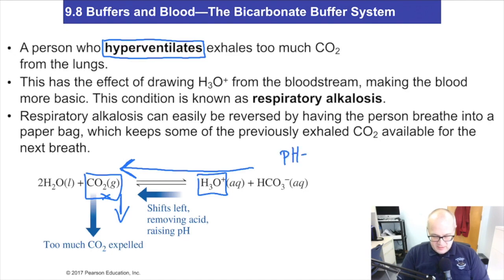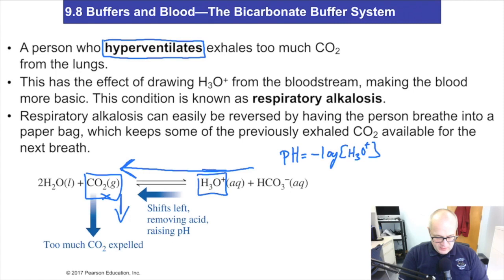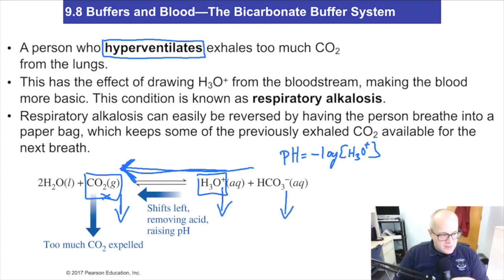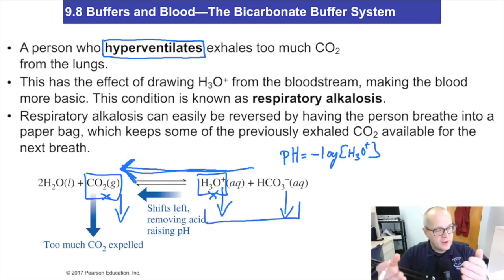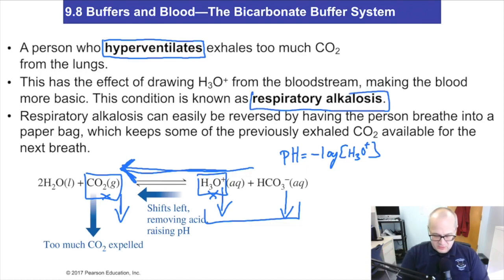Remember, pH is the negative log of the concentration of hydronium. So if the products are reacting to give you starting material, then the concentrations of hydronium and bicarbonate are both going down. That means your pH should go up — as hydronium goes down, pH goes up. And you're becoming more basic. That is called respiratory alkalosis, which means your blood is becoming more basic than normal.